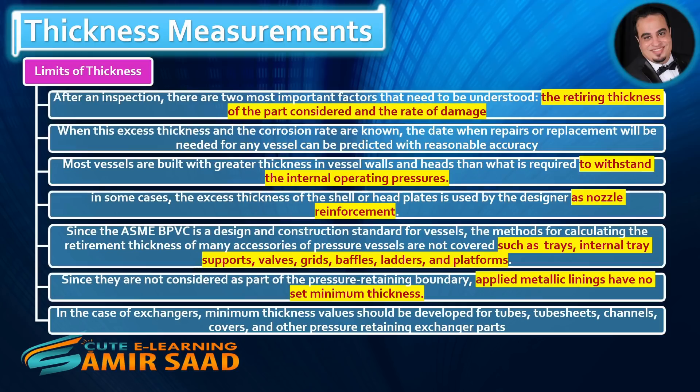Limits of thickness: After an inspection, there are two most important factors that need to be understood — the retiring thickness of the part considered, and the rate of damage. When the excess thickness and the corrosion rate are known, the date when repairs or replacement will be needed for any vessel can be predicted with reasonable accuracy.